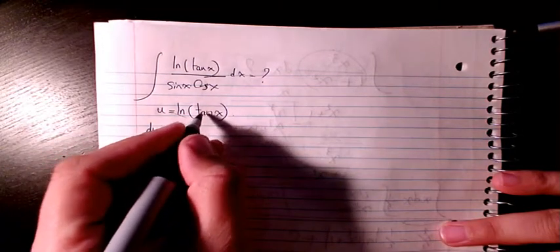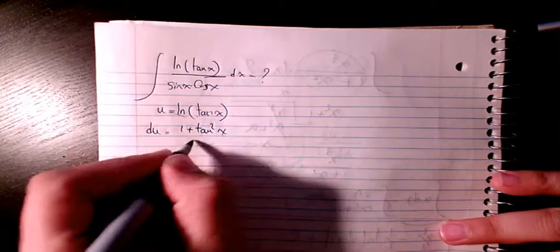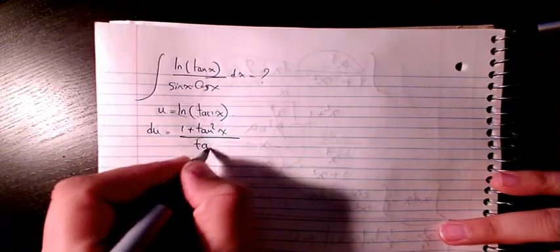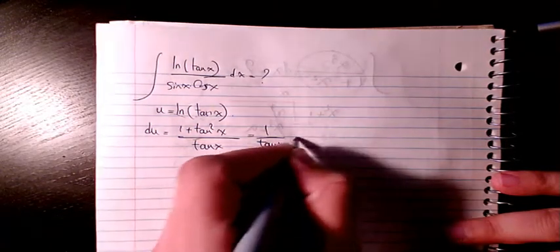So the derivative of tan is 1 plus tan squared x divided by itself. It's going to be 1 over tan plus tan.